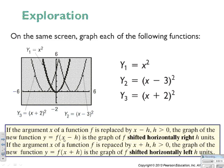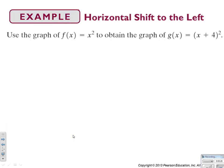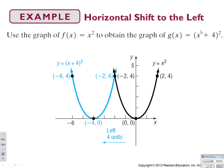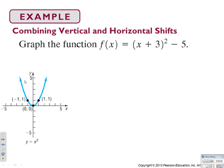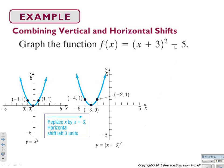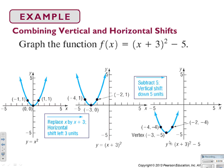Horizontal shifts are opposite to vertical shifts. When you replace the x value with x plus a number, the graph moves left. Here's our parent function — x plus 4 squared moves the entire graph to the left four units. Putting them together, this graph will be shifted down five units and to the left three units: the plus 3 shifts it left three units, and the minus 5 shifts it down five units.